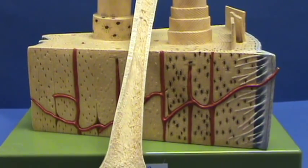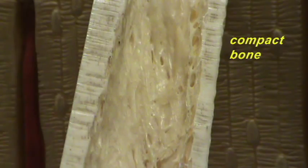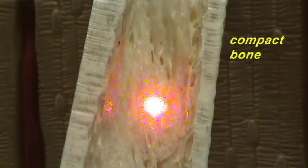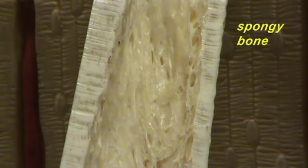If you look closely at the shaft, the cut open shaft of the femur, let's do that, you can see the two types of bone. You have the compact bone which is over here on the outer surface, and inside you can see that we have the type of bone which is referred to as spongy bone.